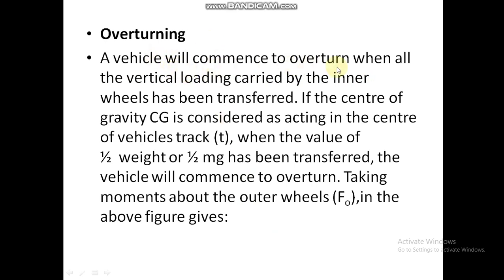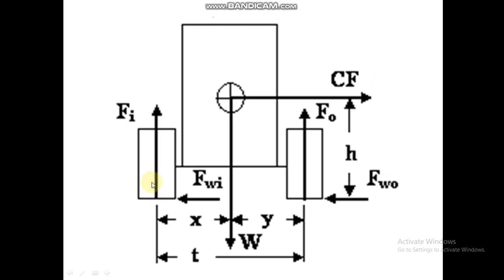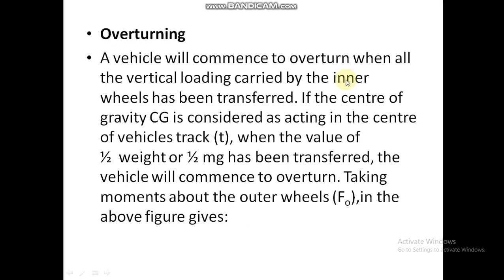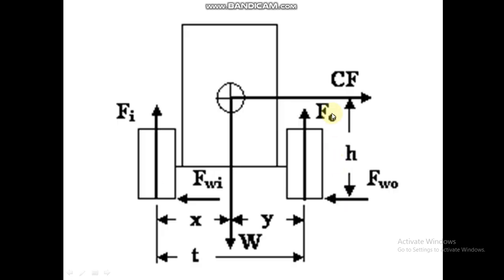A vehicle will commence to overturn when all the vertical loading carried by the inner wheels has been transferred to the outer wheels. Looking at the diagram, when the weight carried by the inner wheels is completely transferred to the outer wheels, the vehicle will tilt to the right side. If the center of gravity is considered as acting at the center of the wheel track, then half of the total weight mg will have been transferred.